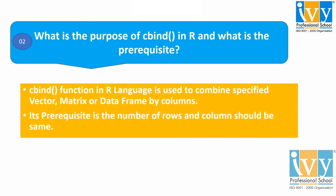The cbind in R stands for column bind. The cbind function in R is used to combine specified vectors, matrices, or data frames by columns. The package needed to use the cbind function in R is the mice package. The prerequisite for using cbind is that the number of rows and columns should be the same.